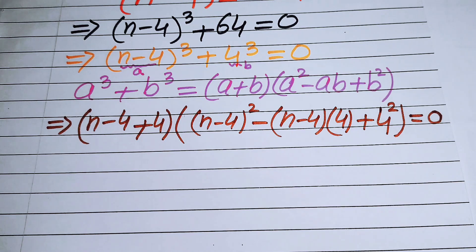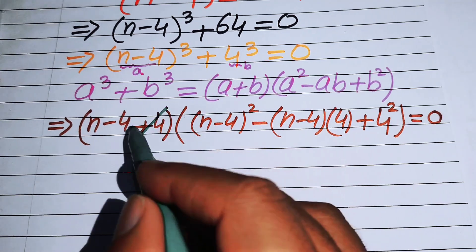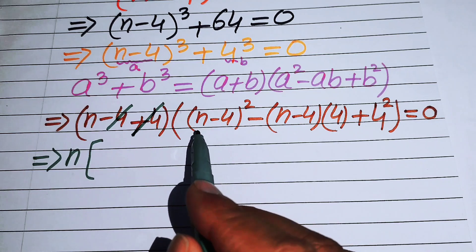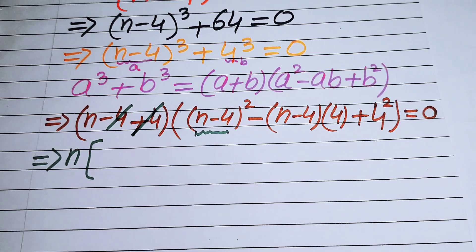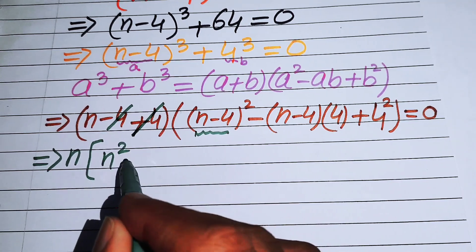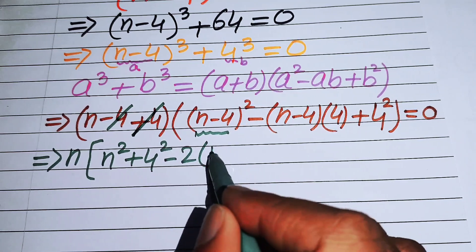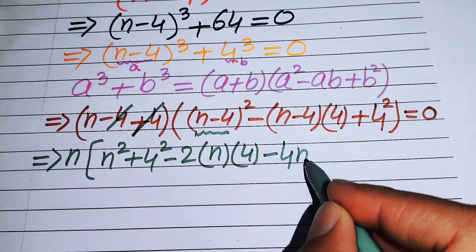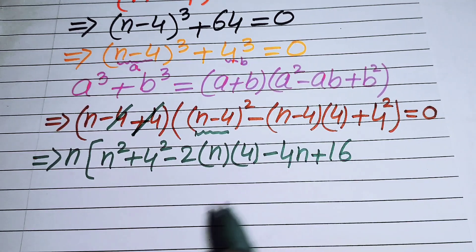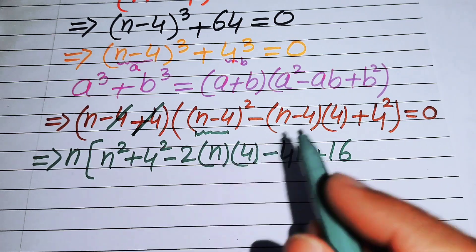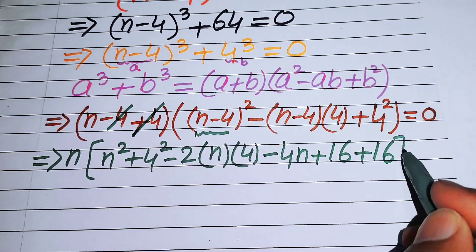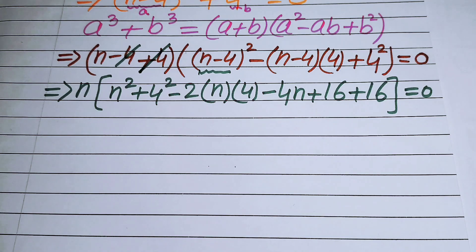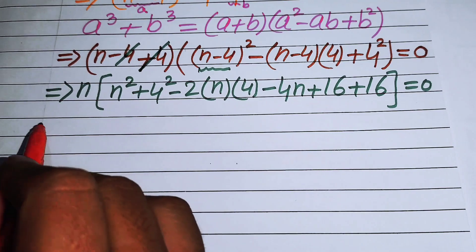In the next step we make simplifications. The +4 and -4 cancel, giving us n. We open the (a - b)² formula which becomes a² + b² - 2ab. We multiply 4 across both terms to get minus 4 times n plus 16, and 4² gives plus 16. This whole equals 0.